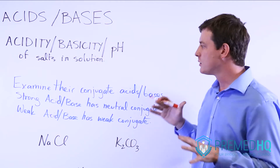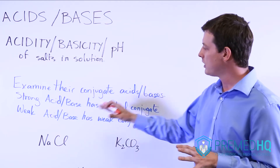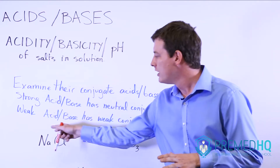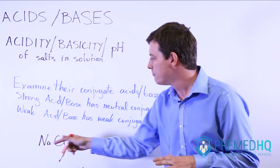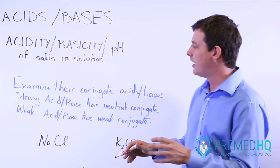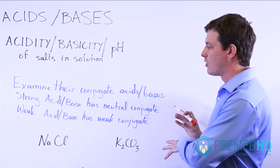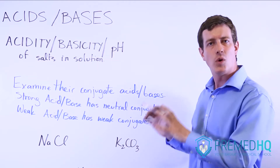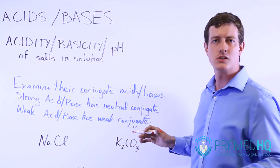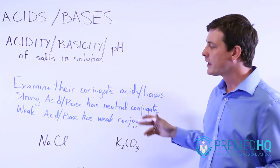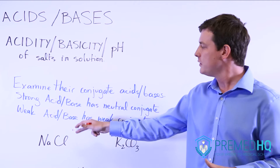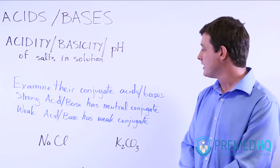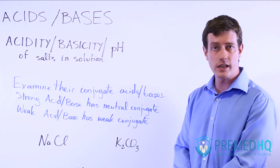Essentially what you do is look at whether an ion is a component of a strong base or acid, and then you can evaluate what's left in your solution. We'll go through a few examples. First, we'll start with NaCl, sodium chloride.